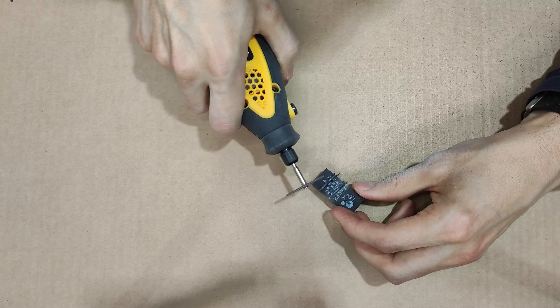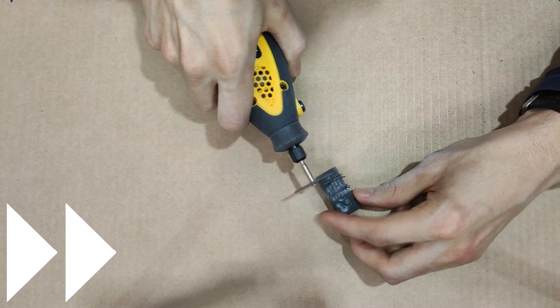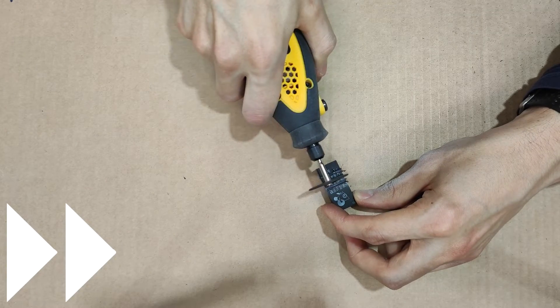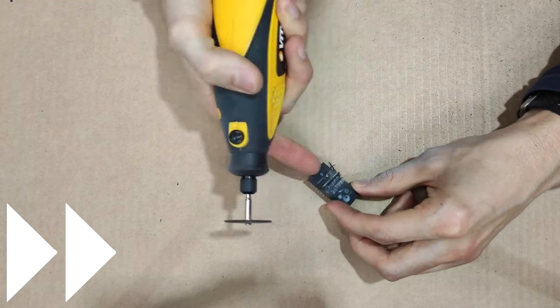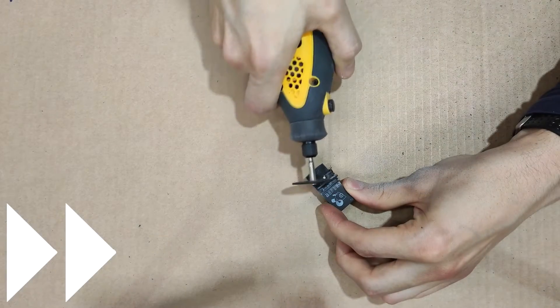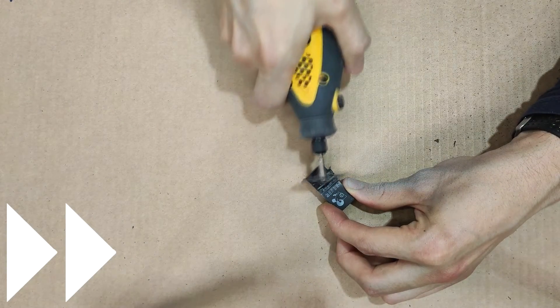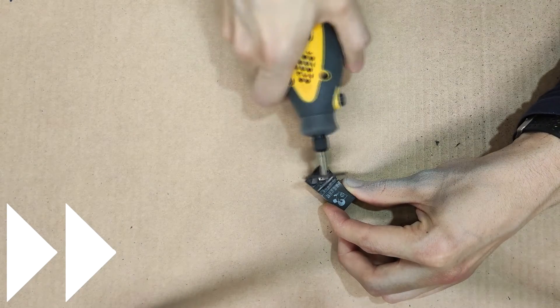I'm starting to see metal, that means I got lucky and found the battery. Now it's just a matter of slowly taking more plastic away until the battery can be removed. Alternatively, I could have just cut one of the battery terminals and left it there, but I'm curious to see if the battery has any markings.